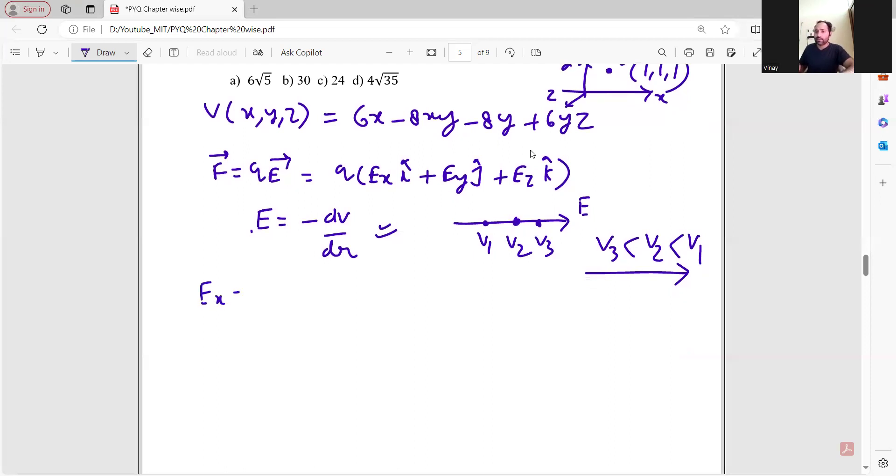Let's calculate Ex. Ex equals minus partial derivative of V with respect to x. Partial derivative means that the rest of the parameters are going to be constant. So with respect to x, y and z will be constant.